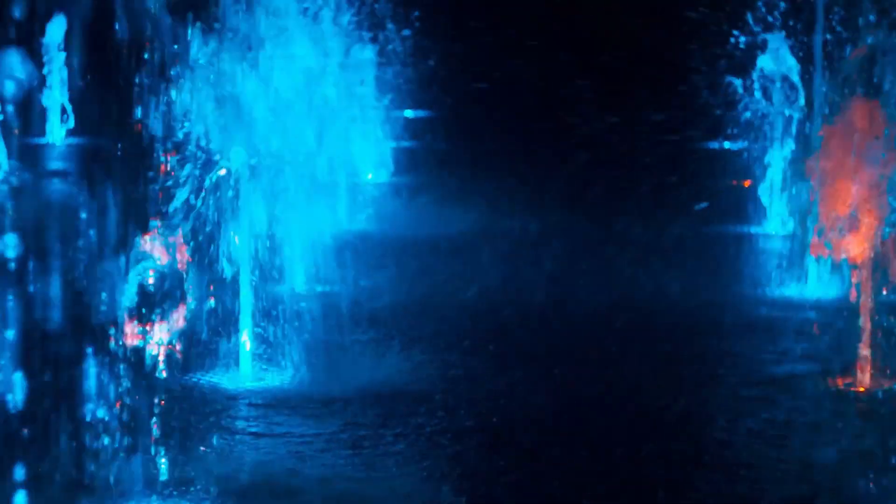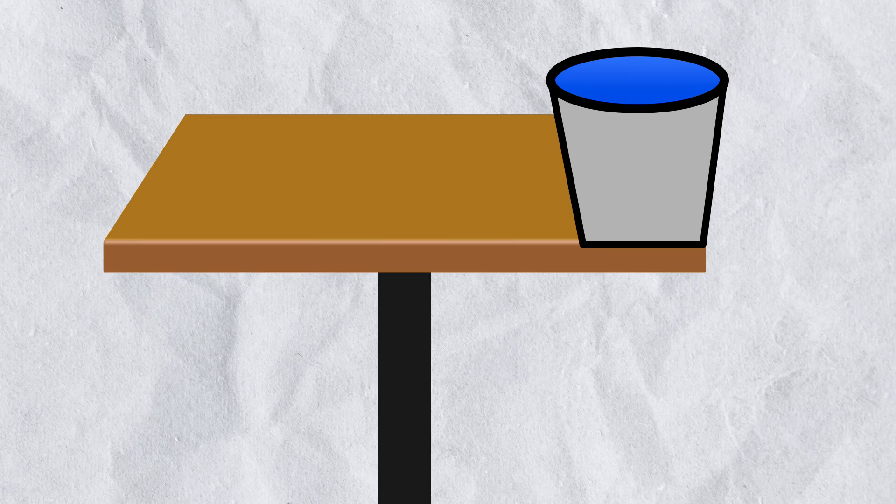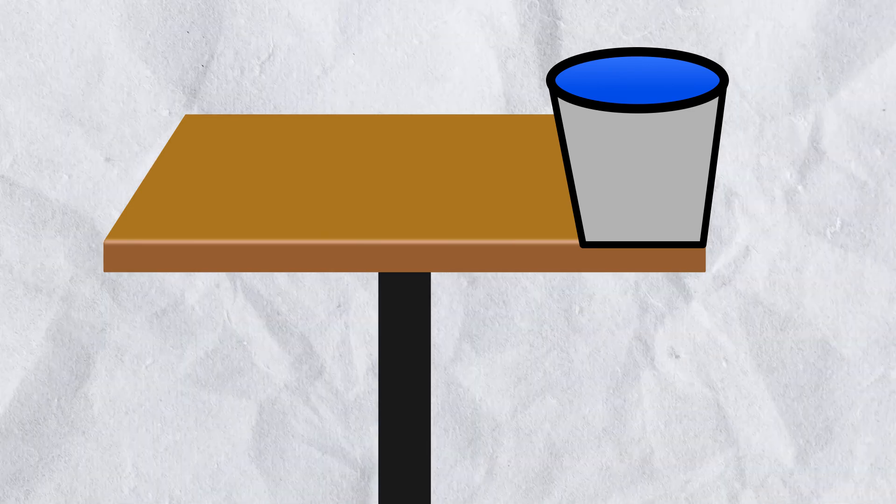This panel shows us a fun trick to make light flow out like water and it really works. To begin we need a table with a bucket full of water placed on its edge.